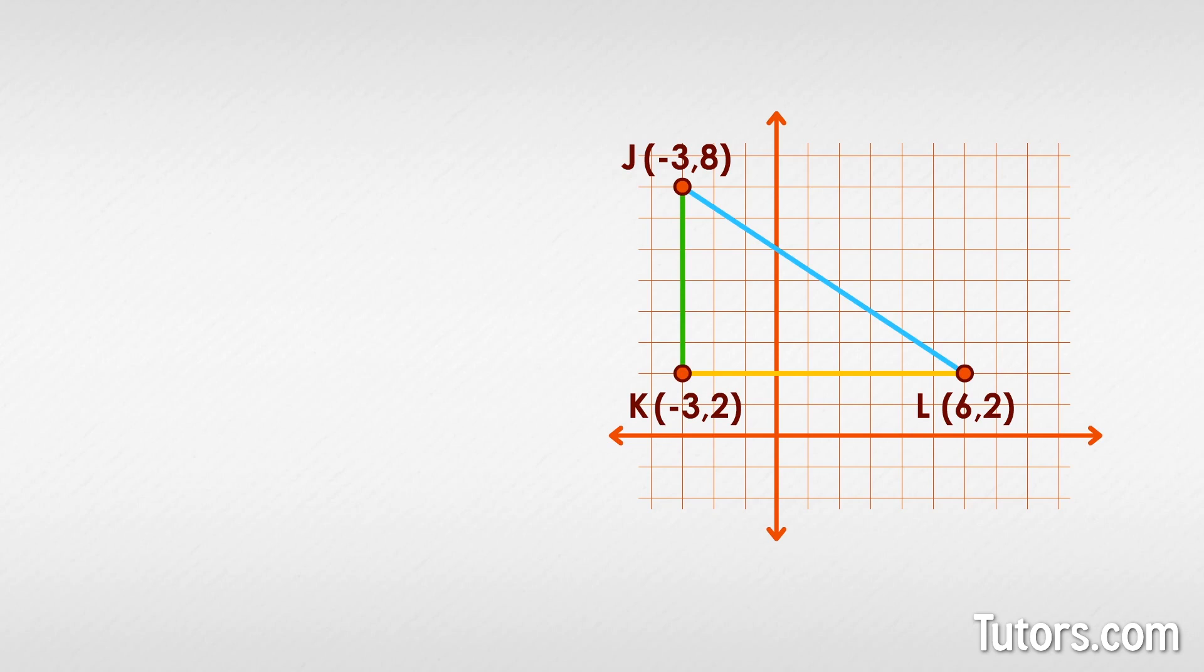Count units straight down from point J to the x value 2, which lines up with point L. 8 minus 2 equals 6, so line segment JK equals 6. Next, count units straight across from point K to point L. 6 minus negative 3 equals 9, so line segment KL equals 9.